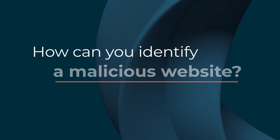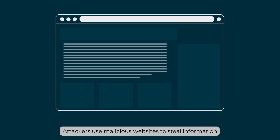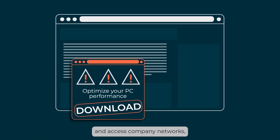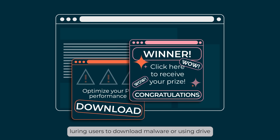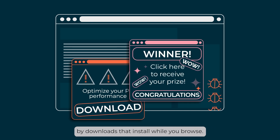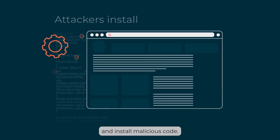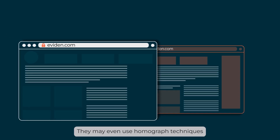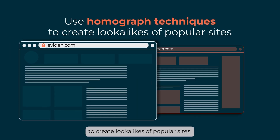How can you identify a malicious website? Attackers use malicious websites to steal information and access company networks, luring users to download malware or using drive-by downloads that install while you browse. Attackers compromise insecure websites and install malicious code. They may even use homograph techniques to create lookalikes of popular sites.